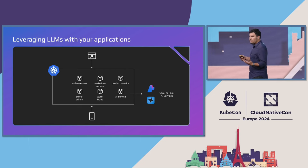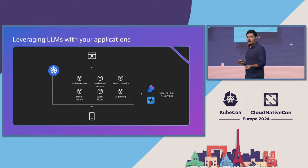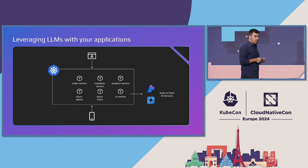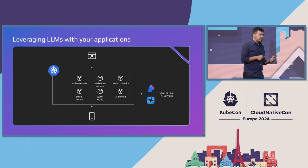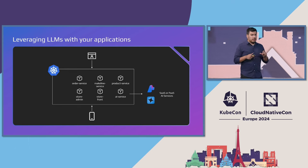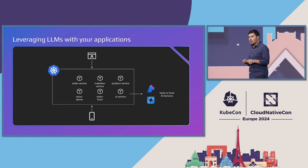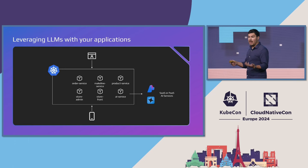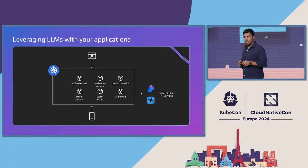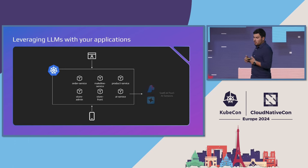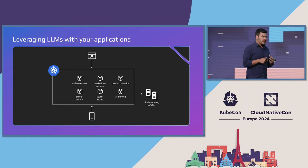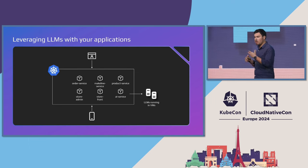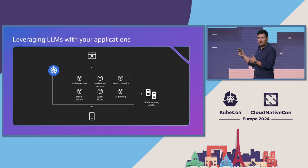But a lot of you, I'm sure, have requirements that go a little bit beyond that. You might have data residency requirements, compliance requirements, you might want more control and flexibility. You might even have existing infrastructure investments in GPU capacity that you want to leverage to make it more economical. So what we see a lot these days is what we've been dubbing local models — models deployed in your own infrastructure, typically on VMs.